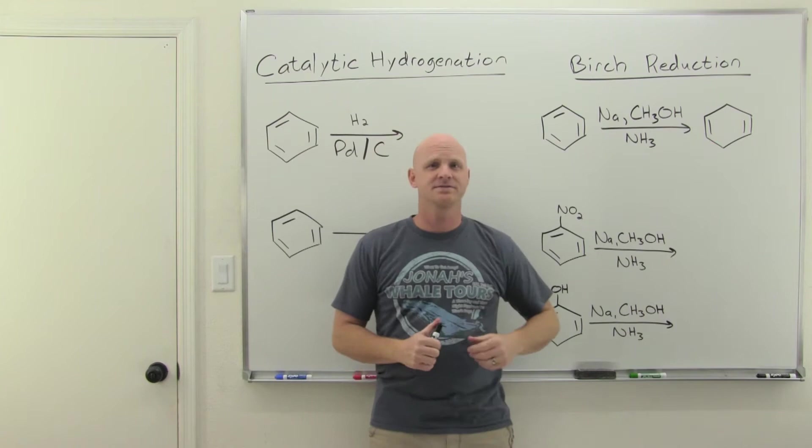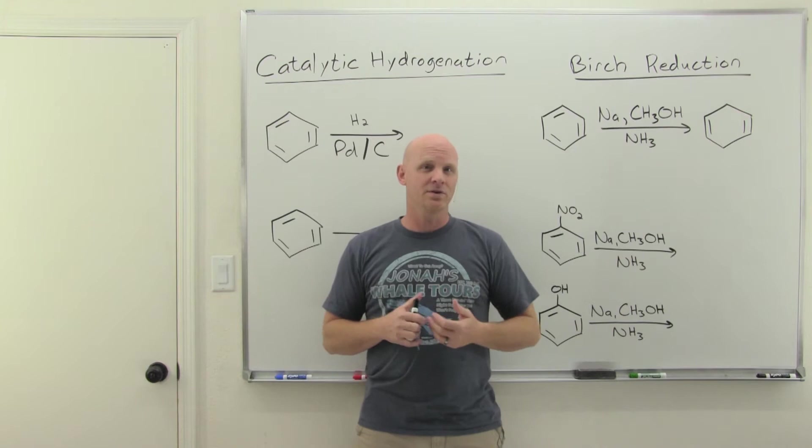Catalytic hydrogenation and the Birch reduction are going to be the topics in this lesson. We're going to really quickly focus on a couple of reduction reactions that involve the pi electrons within the benzene ring.